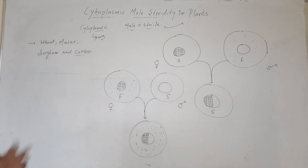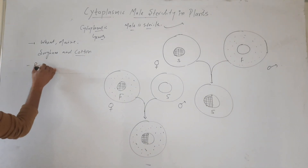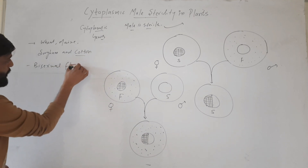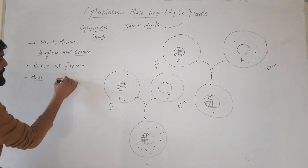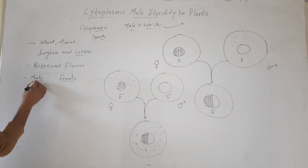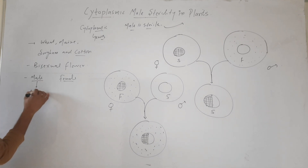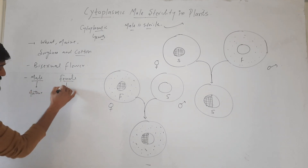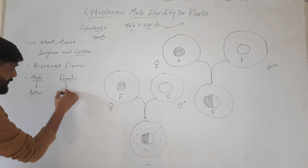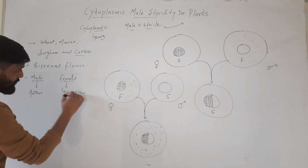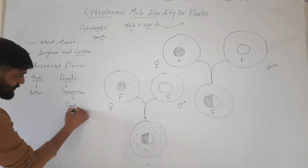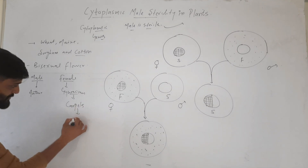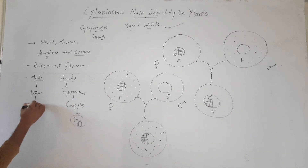All these plants have bisexual flowers, meaning they have both male reproductive parts and female reproductive parts. In the male reproductive part, there is the anther. In the female part, there is the gynoecium — we can say the carpel — and in the carpel there is the egg. And in the anther, there is pollen.